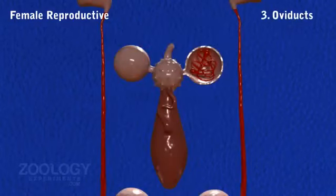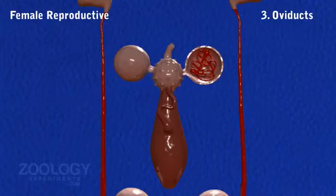Oviducts: The base of each ovisac is continued into a short and slender tube called an oviduct, which runs inward and backwards.